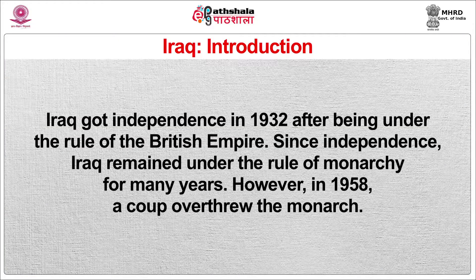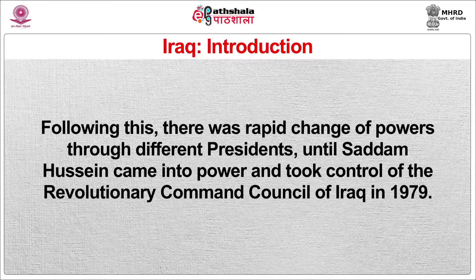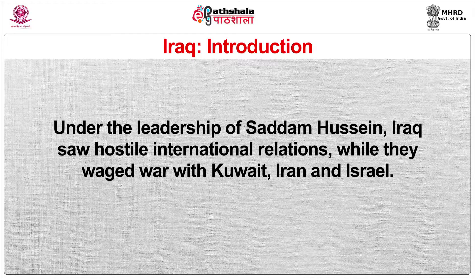Iraq obtained independence in 1932 after being under the rule of the British Empire. Since independence, Iraq remained under a monarchy for many years, until a coup overthrew the monarchy in 1958. There was a rapid change of power through different presidents until Saddam Hussein took control of the Revolutionary Command Council of Iraq in 1979. Under Saddam Hussein, Iraq saw hostile international relations while waging war with Kuwait, Iran and Israel. Shias and Kurds also led several religious uprisings against Saddam Hussein, which the state repressed using the Iraqi military and chemical weapons.